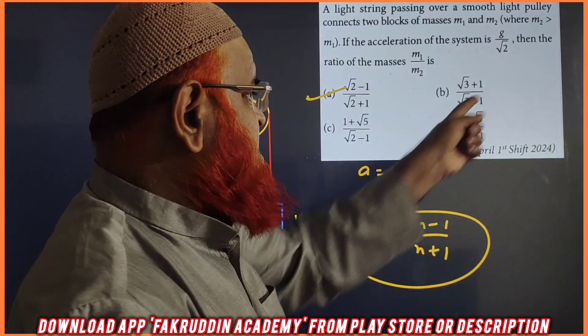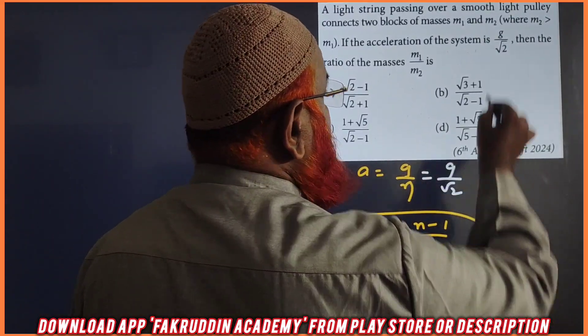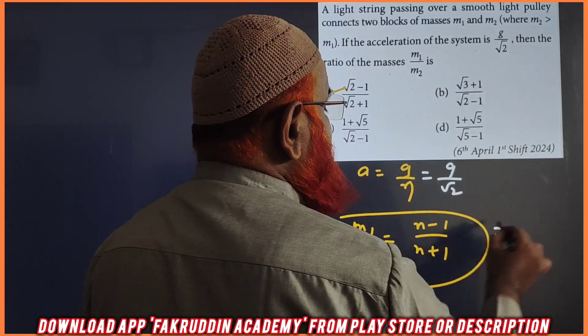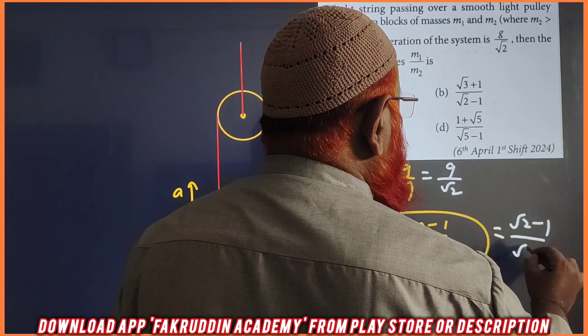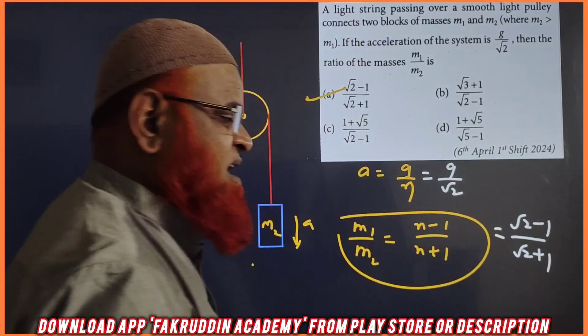If A is equal to G by N, means it is G by root 2 given in the problem here, then you can write root 2 minus 1 by root 2 plus 1 is going to be your answer.